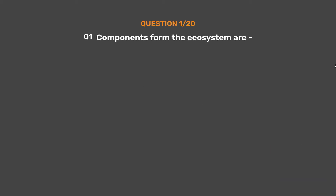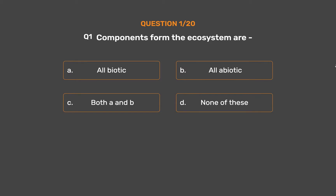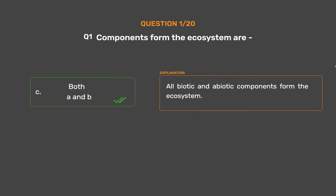Question number 1: Components that form the ecosystem are — Option A: All Biotic, Option B: All Abiotic, Option C: Both A and B, Option D: None of these. The correct answer is Option C, Both A and B. All biotic and abiotic components form the ecosystem.